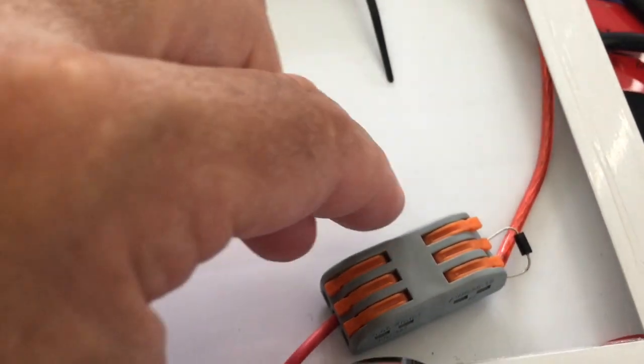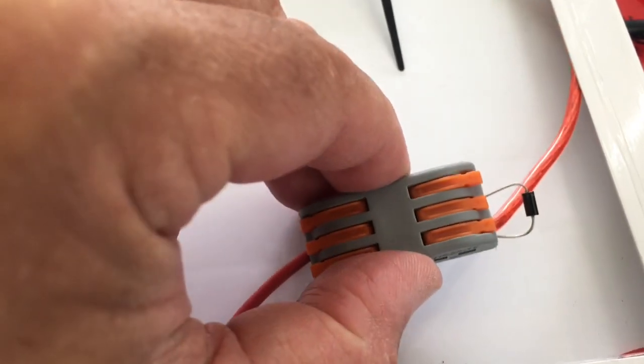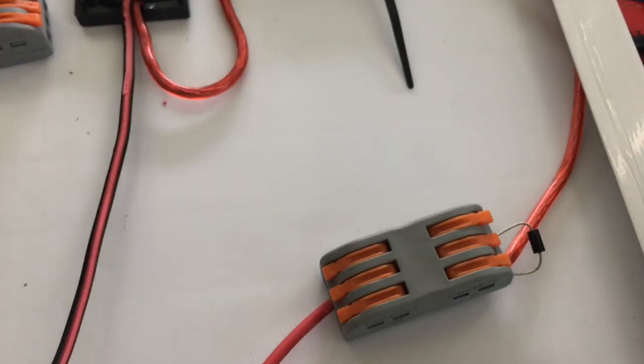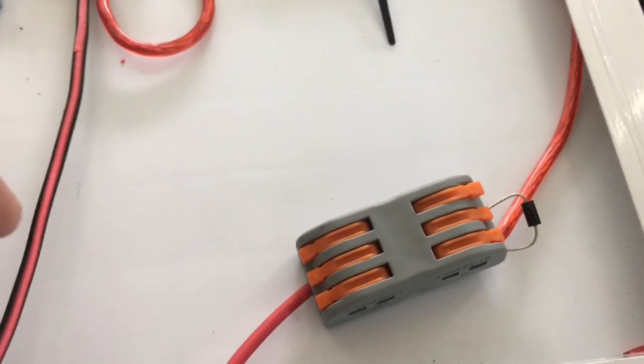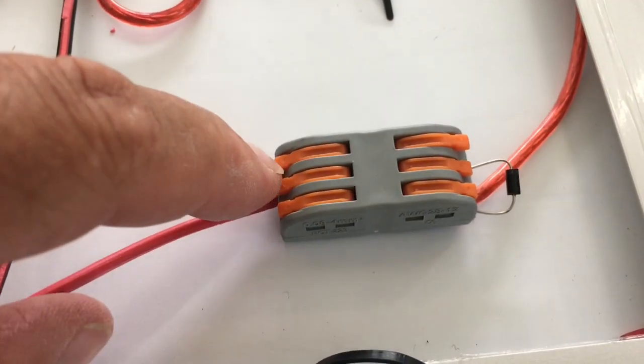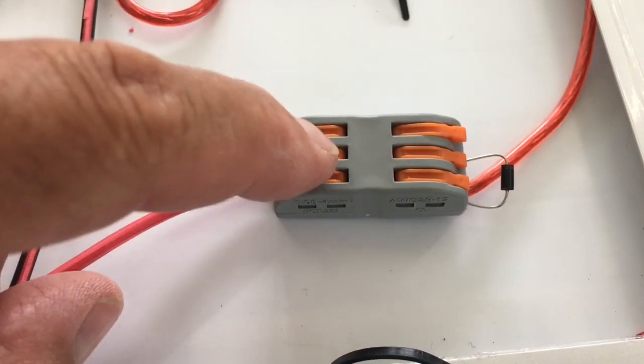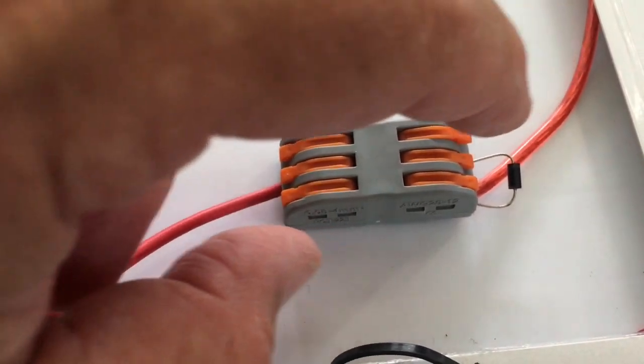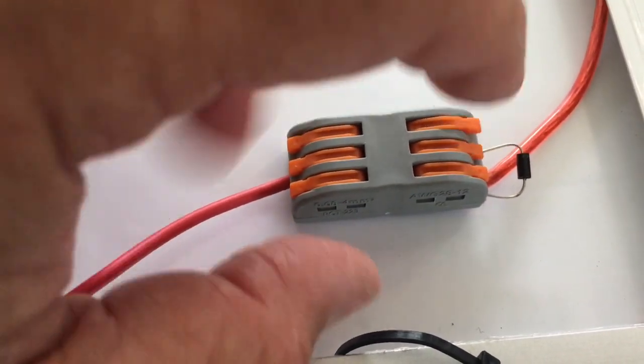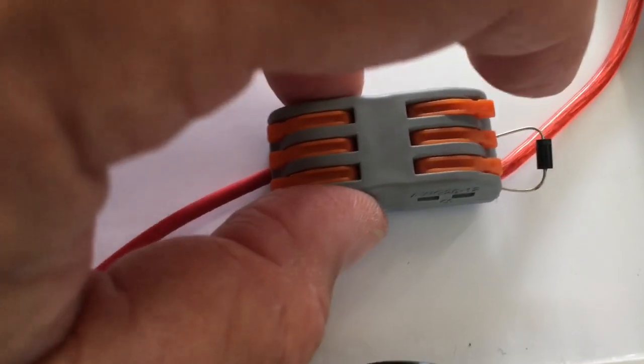I soldered on this fuse here which is a one amp fuse holder and I'm taking that over to this connector here. It's a Wago style connector, however Wago doesn't make these, I found these on AliExpress. So I'm taking in and then I'm jumping over to this other line and the stripe on this diode.